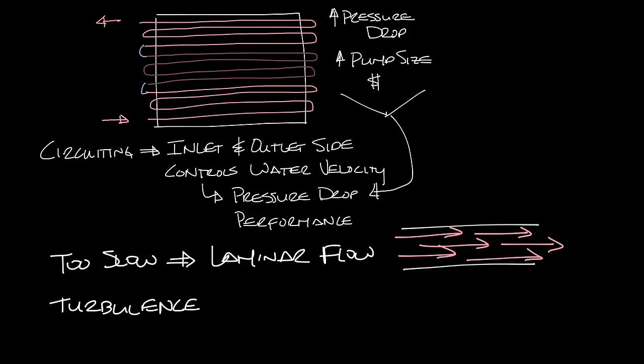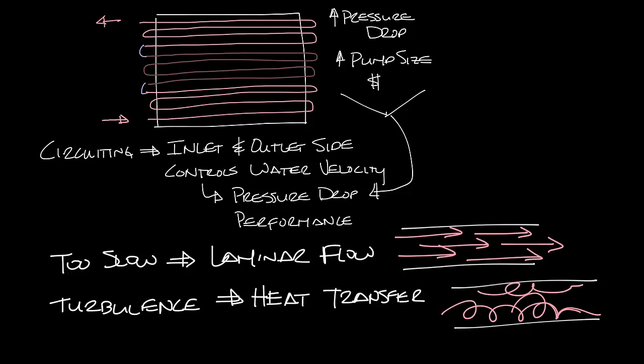Turbulence is needed for heat transfer. Basically the water splashing around the insides of the tube and making contact with the tube is what is transferring the heat from the water, in the case of a heating coil, to the tubes.